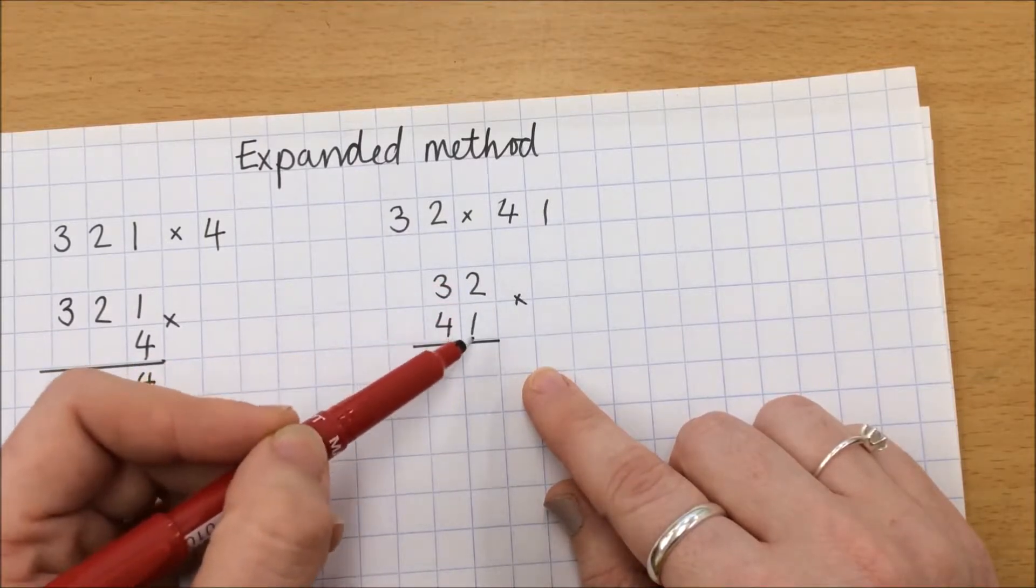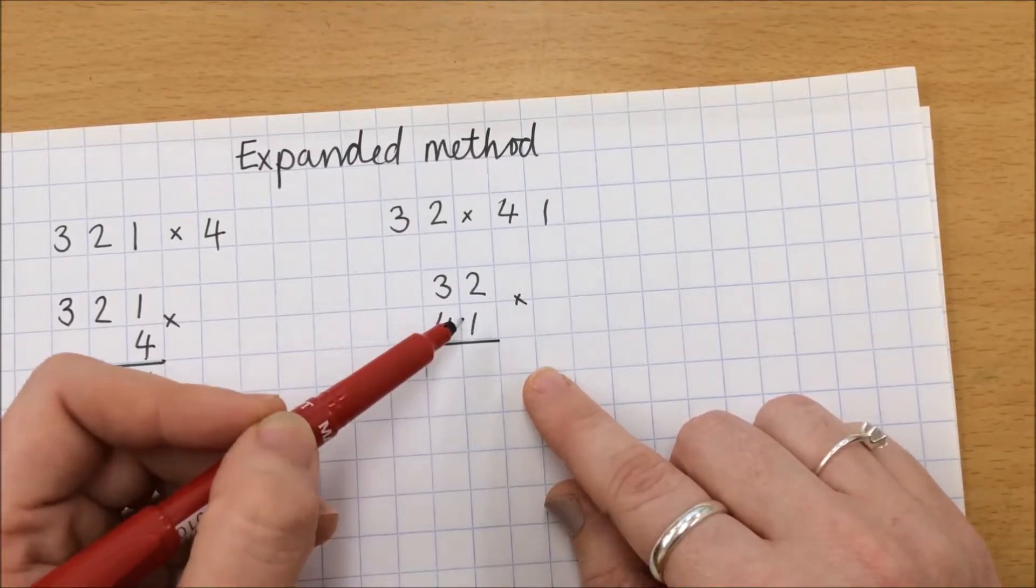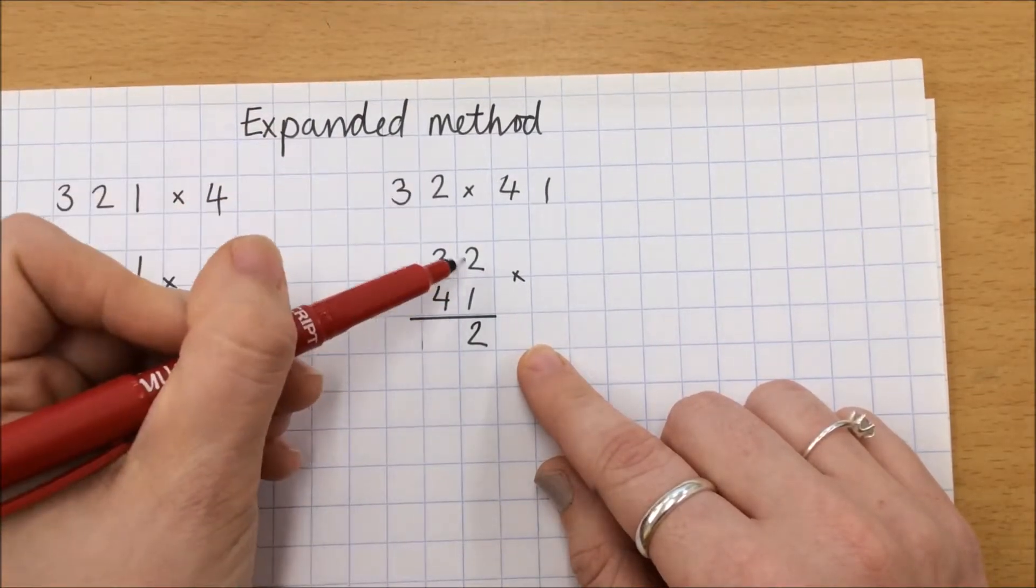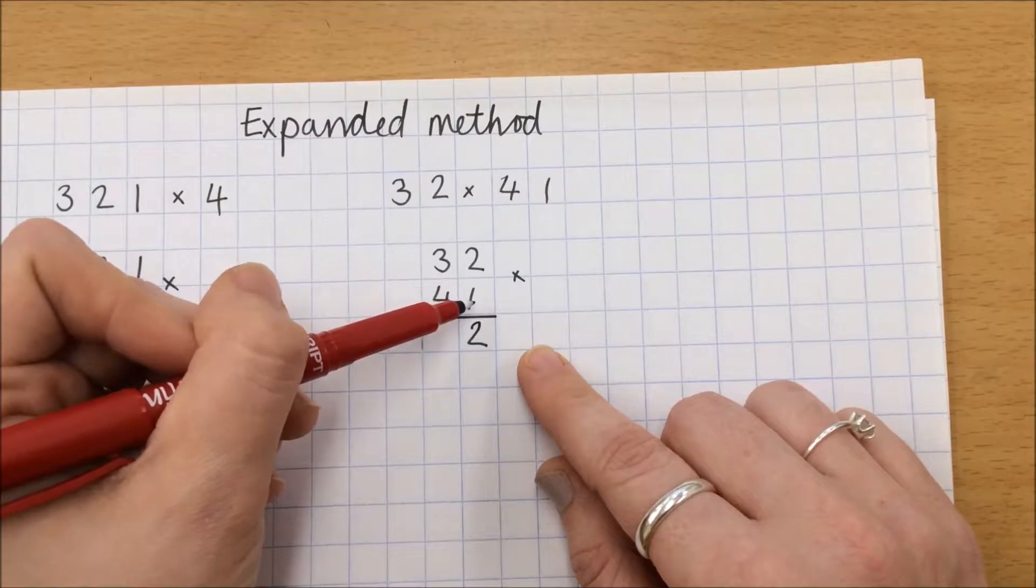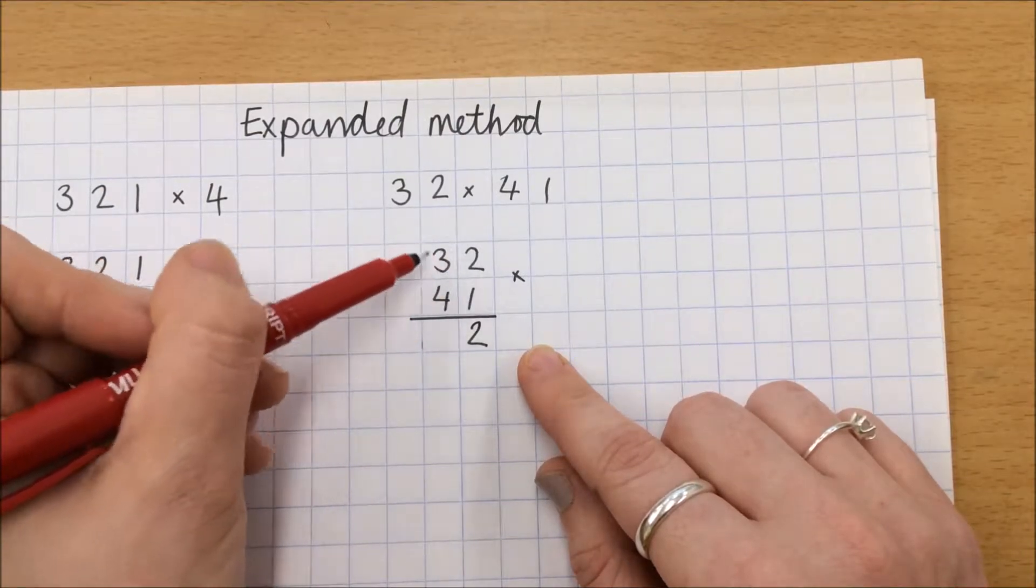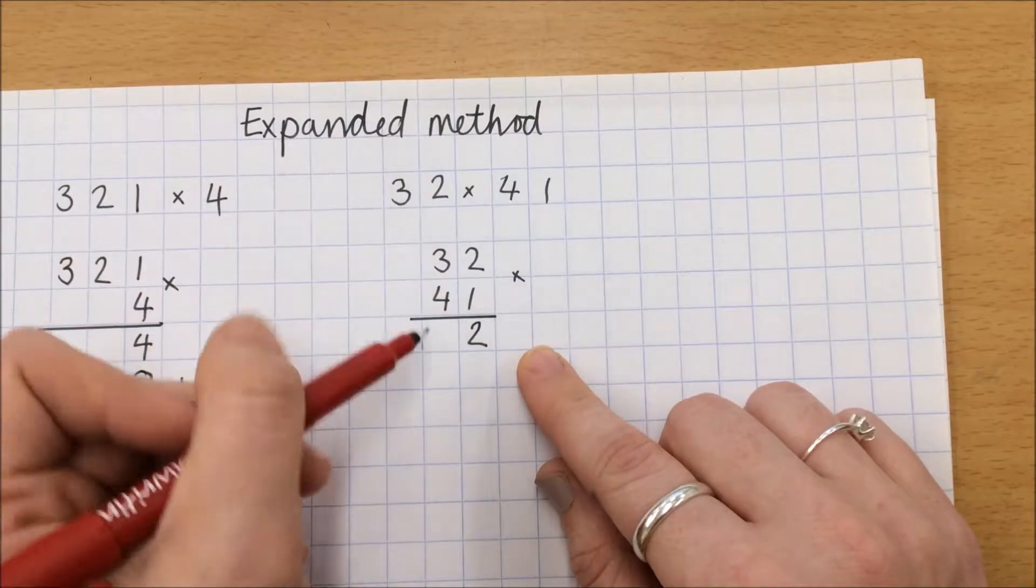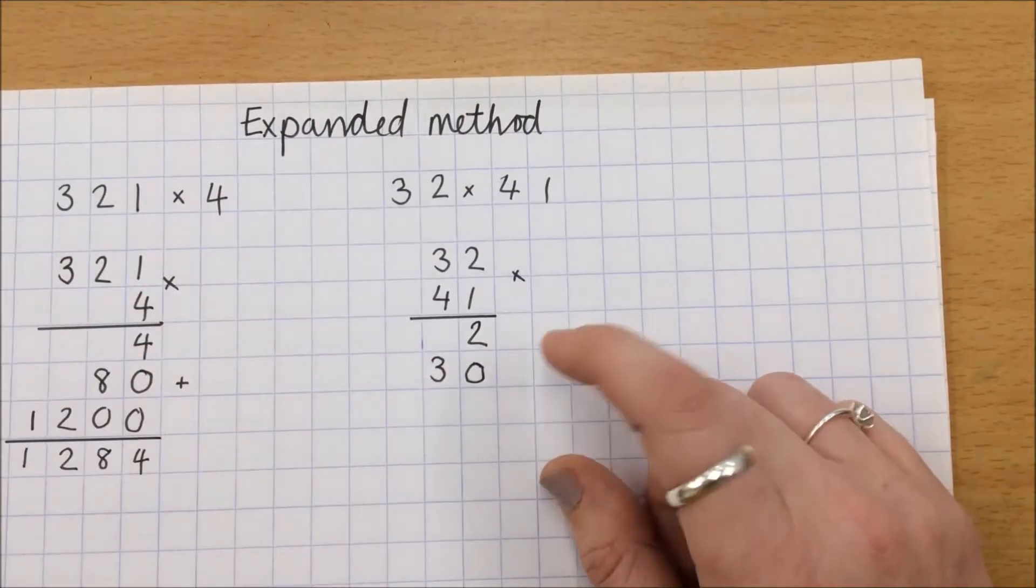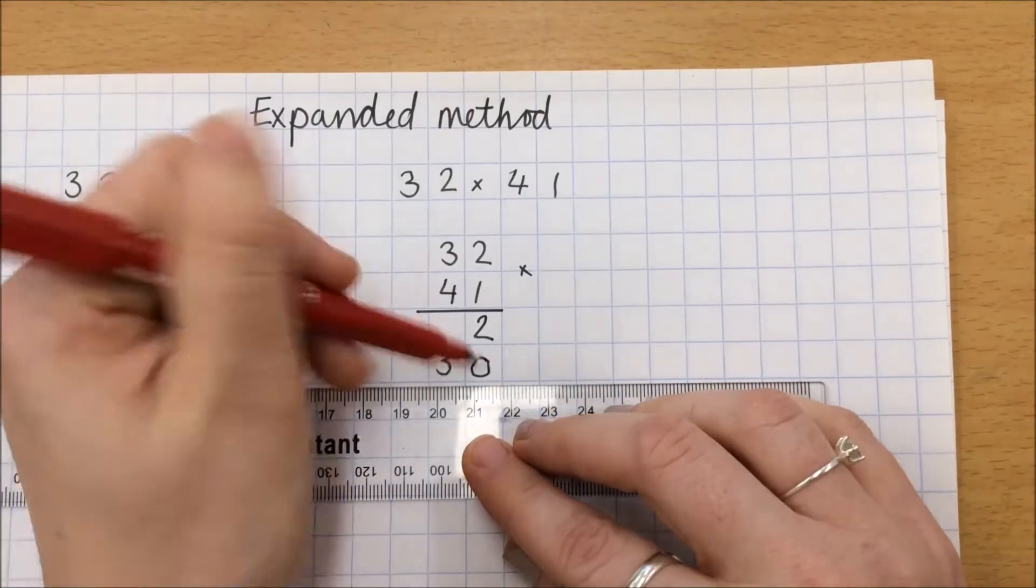2 multiplied by my 1. We're going to be focusing on this 1 first. 2 multiplied by 1 is 2. 1 of 30, 3 tens multiplied by 1 is 30. And we need to put that underneath. Some people would then draw a line underneath this.